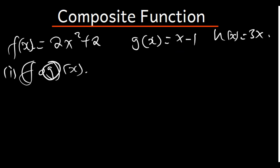So we are going to say f of g of x is going to be equal to 2, open brackets, and where there is x we put x - 1, which is the function g. Then since x is squared, I have to square this, plus 2.